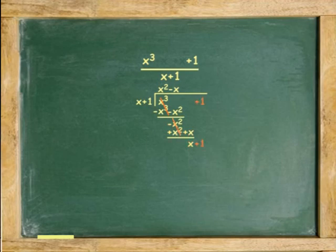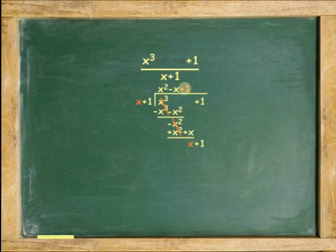Now bring down the positive 1. Divide x by x and the result 1 is placed above in the quotient. Multiply 1 by x plus 1 and get x plus 1. Subtract. This is the end of the third cycle with no remainder.